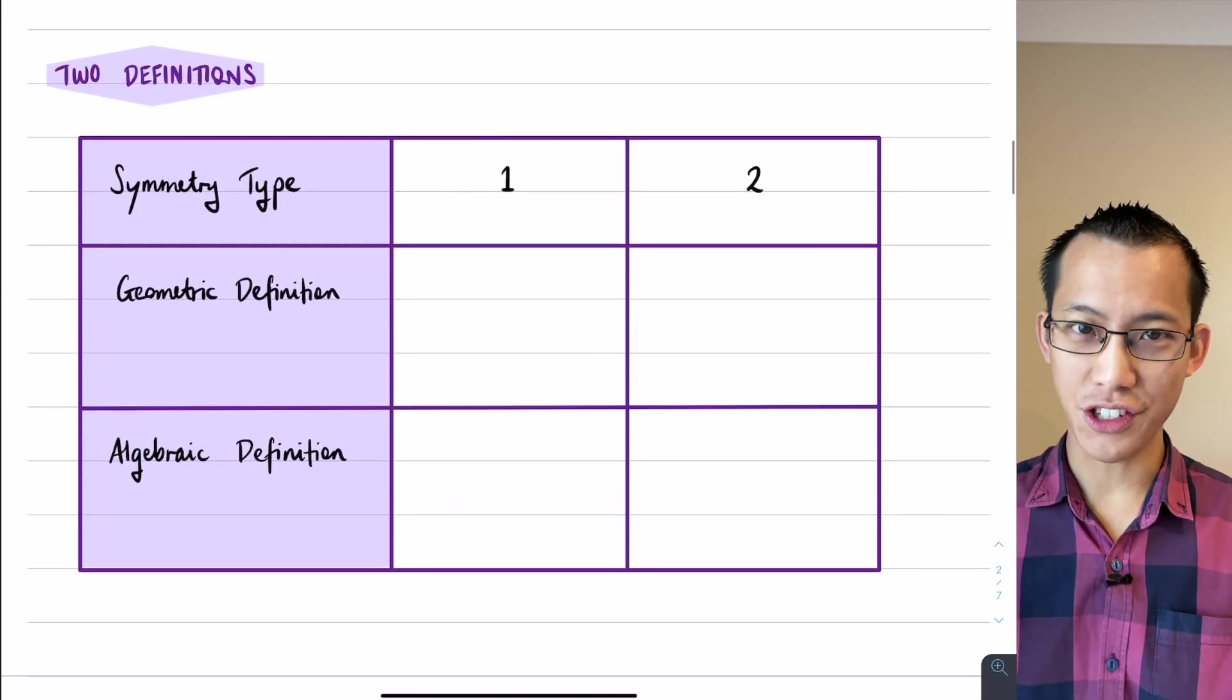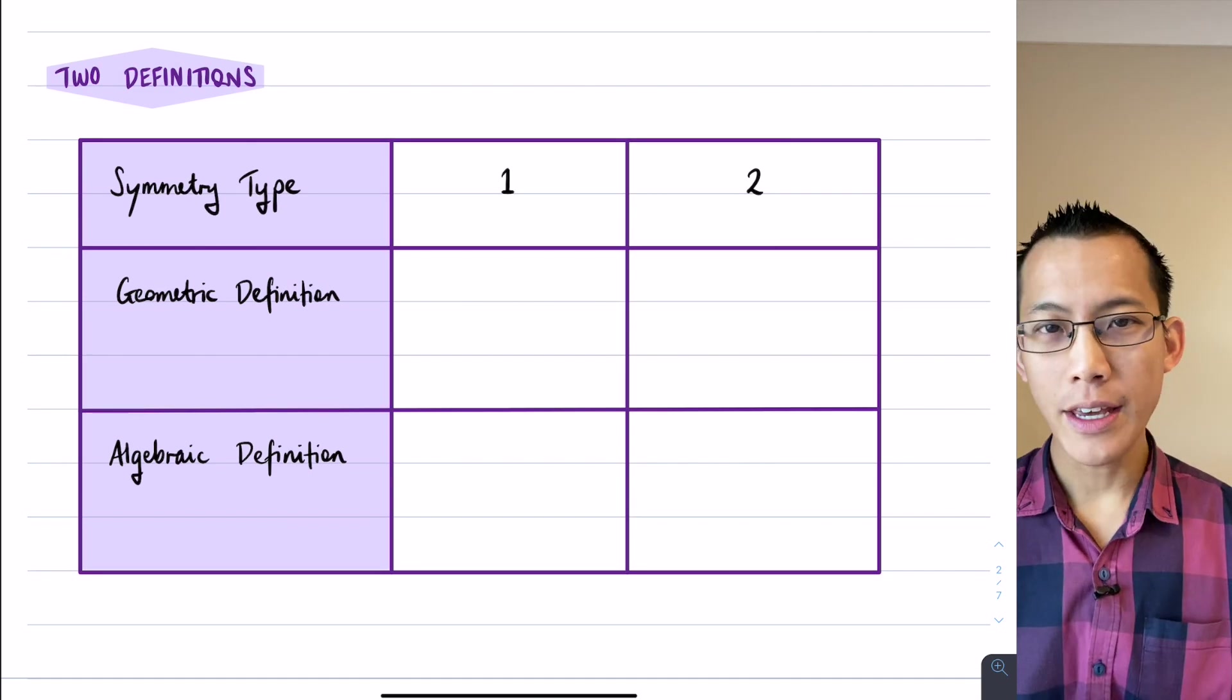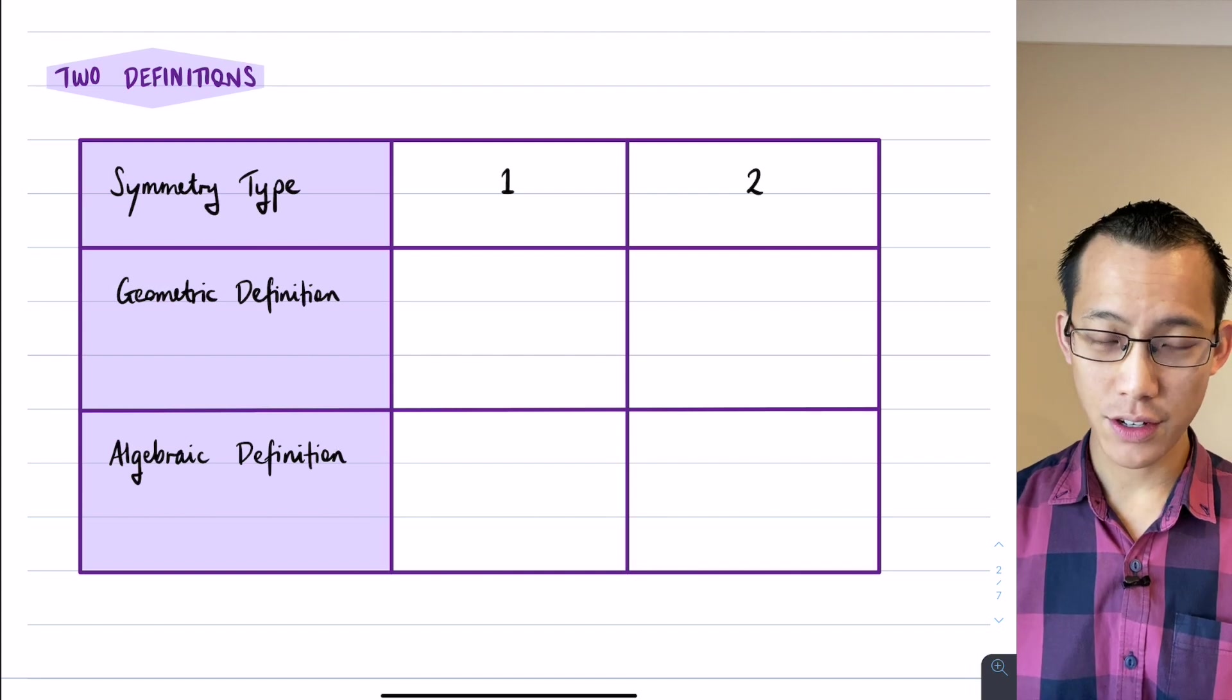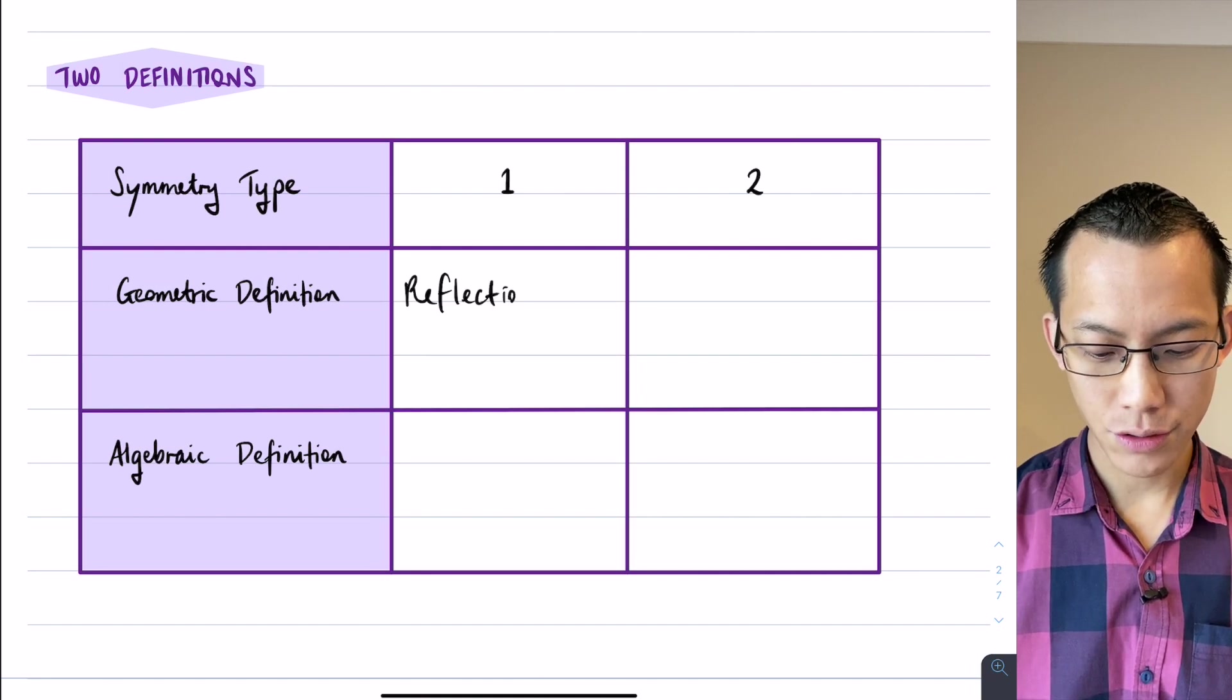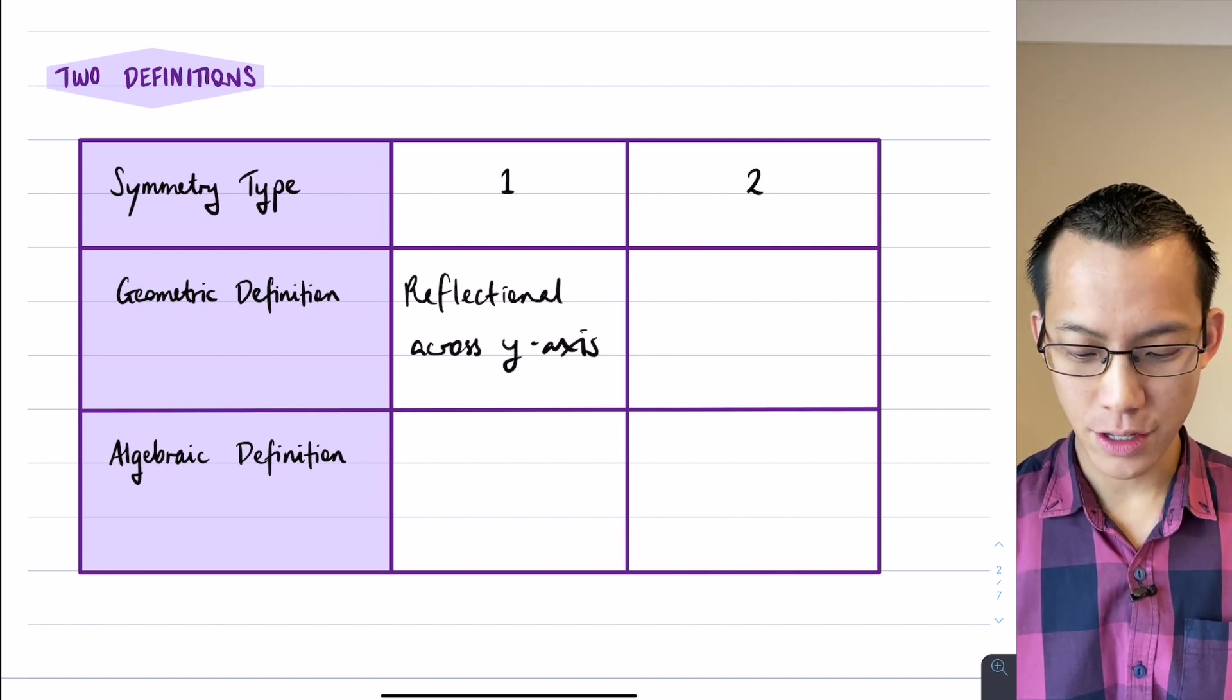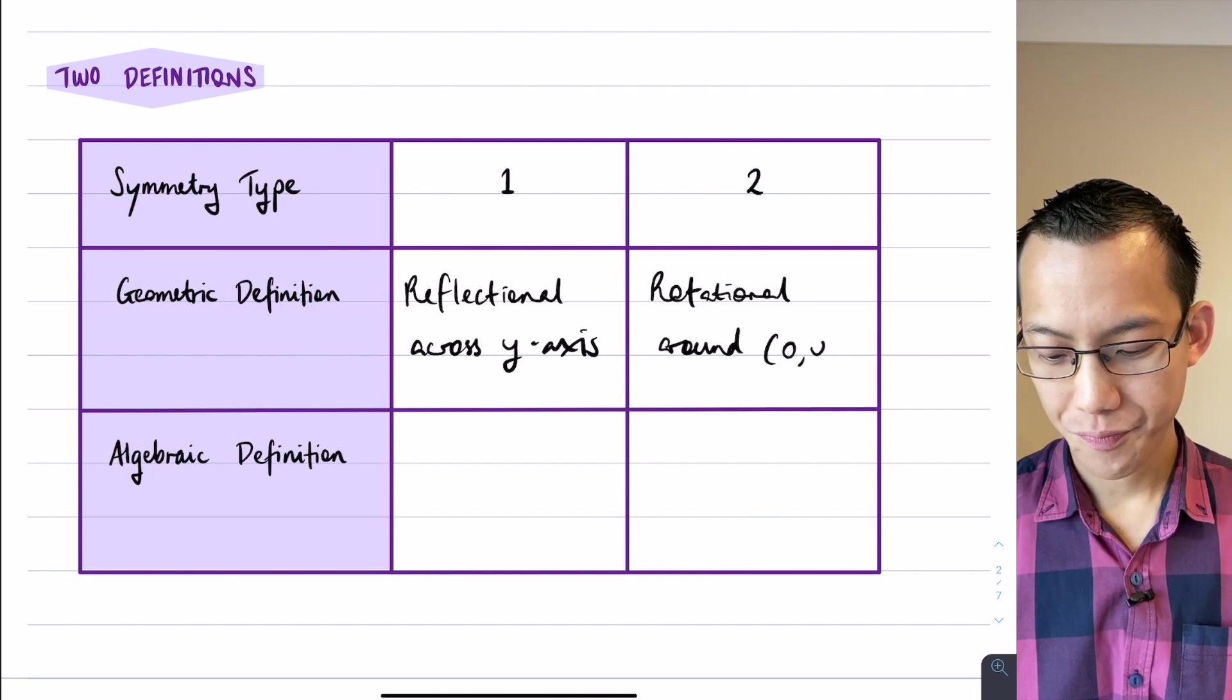Now how can we use this knowledge to come up with some helpful definitions for us? Well, you've got this first symmetry, the one for this side, this red function, and the second type of symmetry, and we can describe it geometrically in the way that we just talked about. So the geometric definition for symmetry type 1 is it's reflectional or reflected across the y-axis.